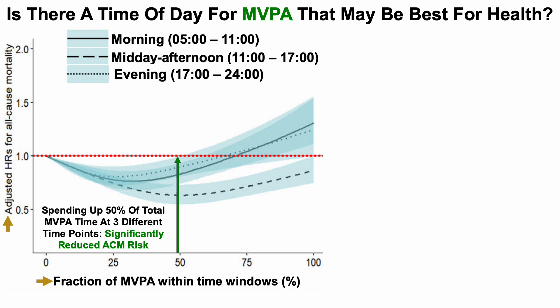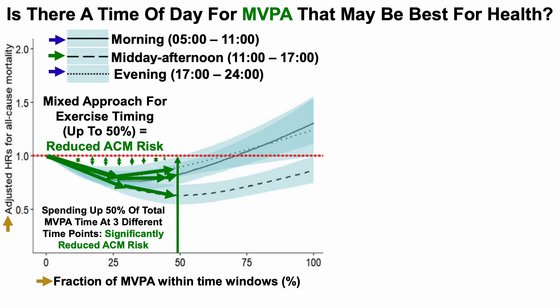Spending up to 50% of total MVPA time in any of the three time windows was associated with a significantly reduced all-cause mortality risk. Looking at the shaded blue region and median line for midday to afternoon, we see a significantly decreased all-cause mortality risk relative to a hazard ratio of 1. For morning and evening groups that performed about half of their workouts in each time point, there was also a significant reduction — the shaded blue region for all three time points is below 1. In other words, a mixed approach to exercise timing, not doing all of your exercise exclusively within one time point, was associated with reduced all-cause mortality risk.